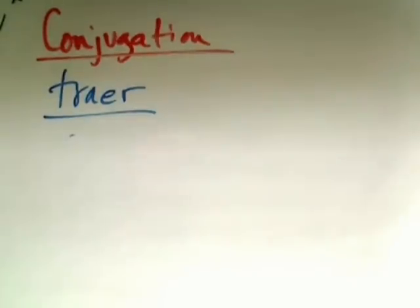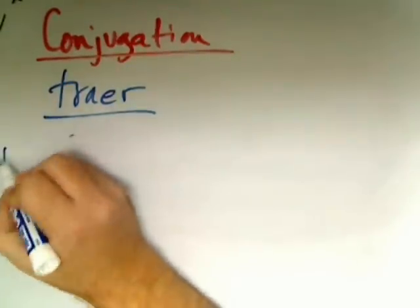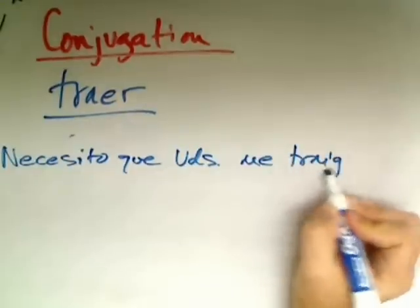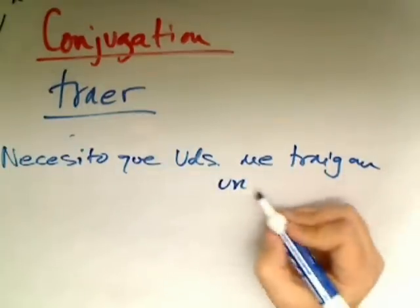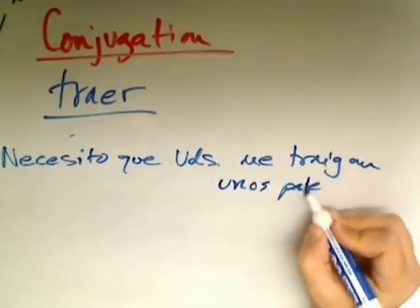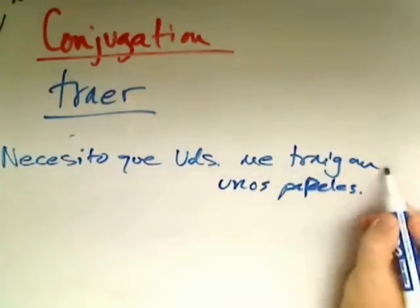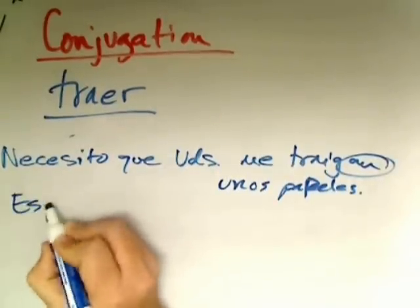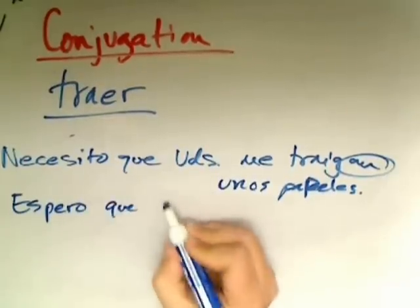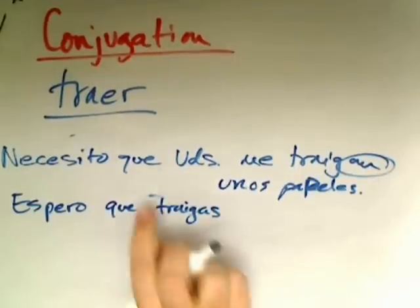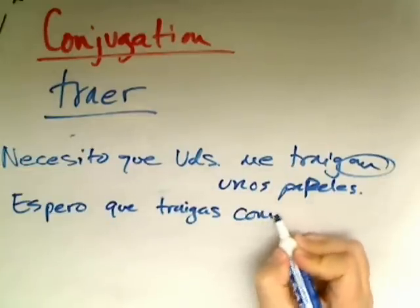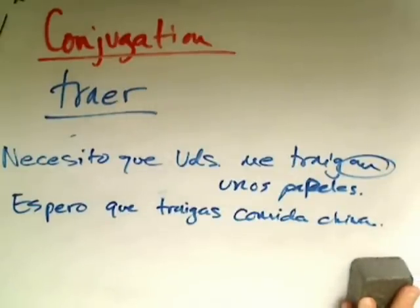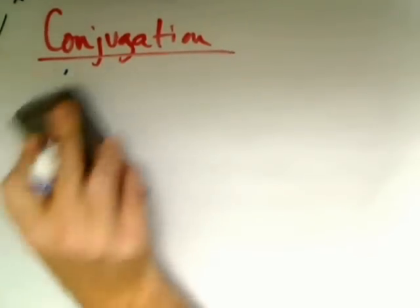An example with the present subjunctive: Necesito que ustedes me traigan unos papeles — I need you all to bring me some papers I left at home. Or, if my wife calls on her way home, I might say: Espero que traigas comida china — I hope you bring Chinese food. Tengo ganas de comer comida china. So that's the present subjunctive irregular form of traer.